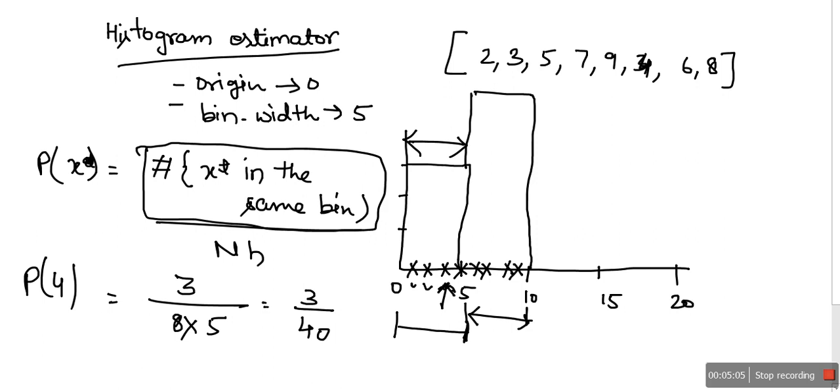This is the way the histogram estimator is used to find out the density, or we can say probability. In actual this one is not same - density is actually used for continuous range, but for simplicity I'm using it as a probability. Histogram actually needs two values: origin and bin width. Origin will tell you from where we need to start, and bin width is the range which we need to consider to find out the number of data points lying. This is the formula.